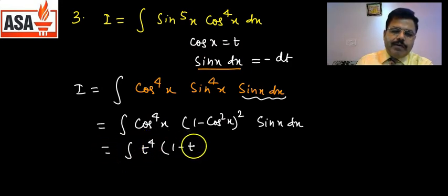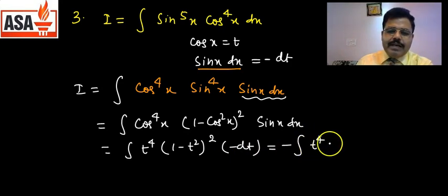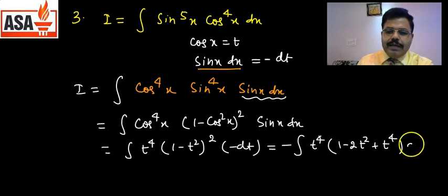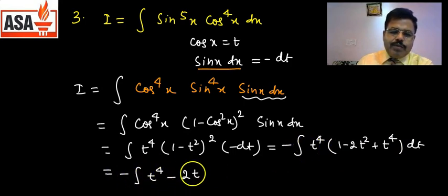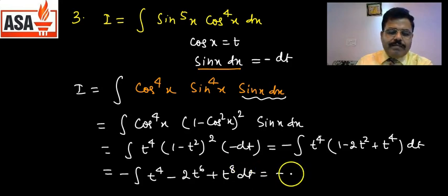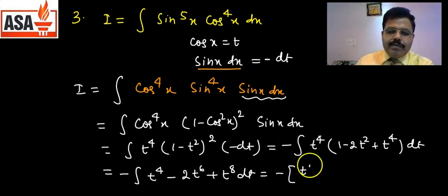cos x = t put करने पर: −∫t⁴·(1 − t²)²·dt। Expand करें: −∫t⁴·(1 − 2t² + t⁴)·dt = −∫(t⁴ − 2t⁶ + t⁸)·dt।